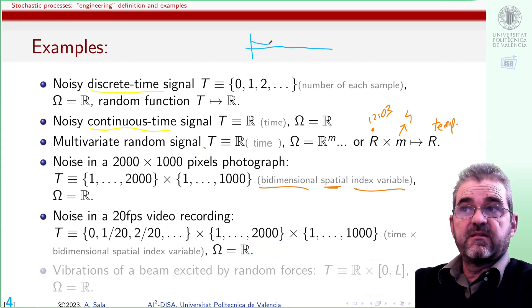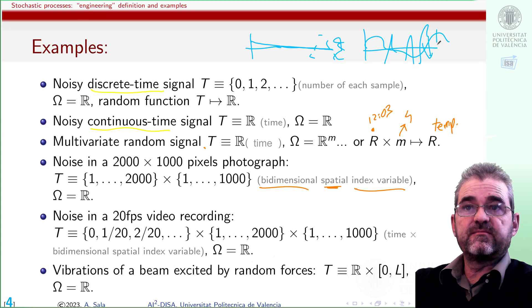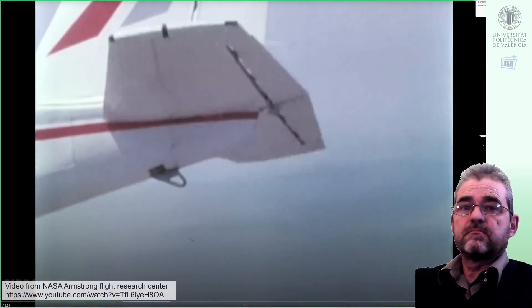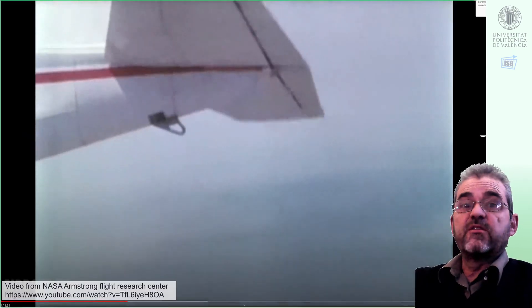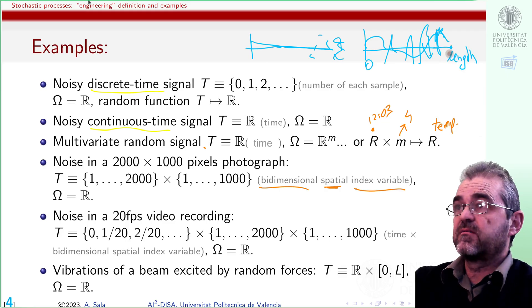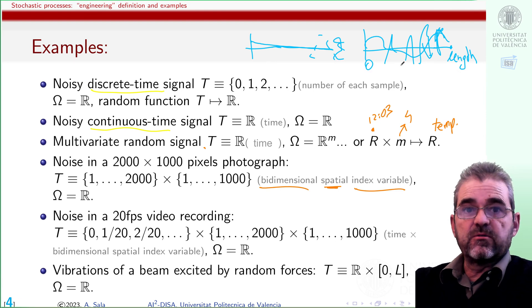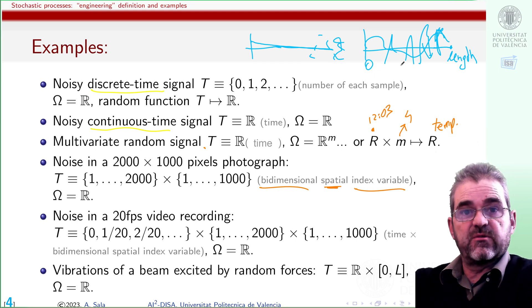There may be correlation between the noise at adjacent pixels or an adjacent instant, or both. And last, we may have an airplane wing excited by turbulence, so there are vibrations, flutter, and these random vibrations are a random function of both length and time. These are examples of noisy signals in audio, video, structures, multivariate control, that we need to formally analyze in a statistical way. These are the stochastic processes.